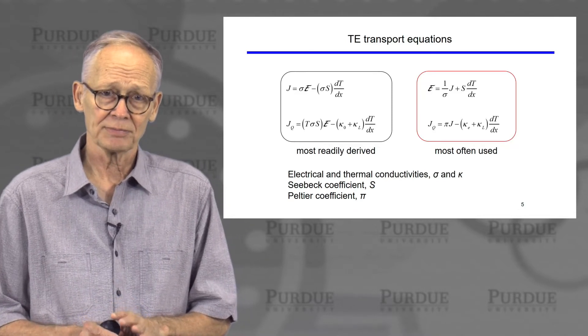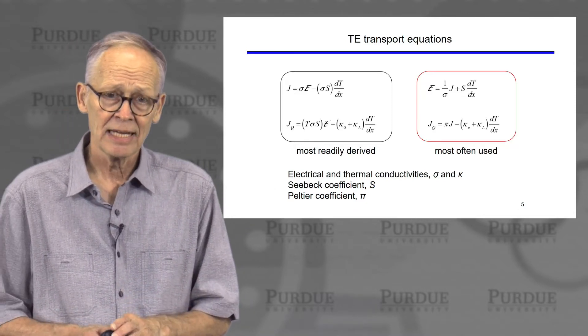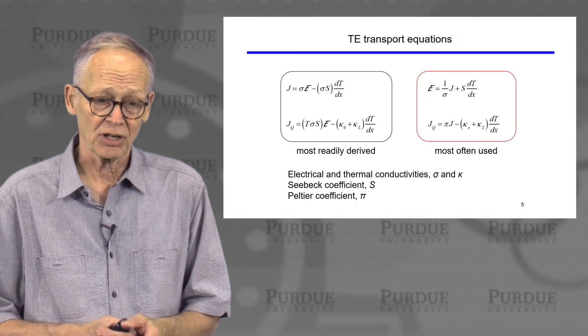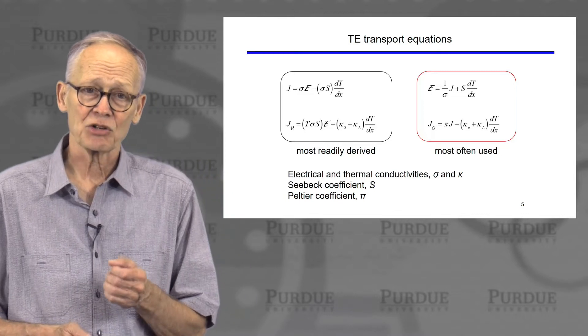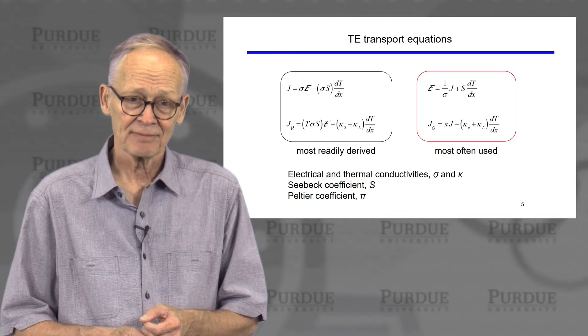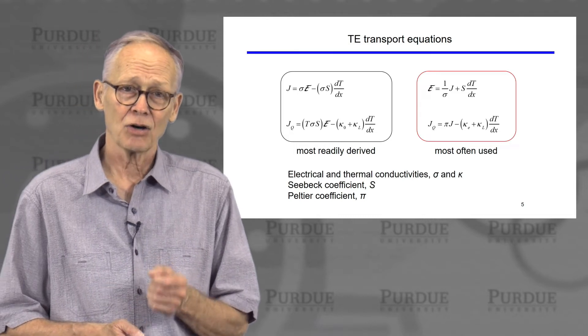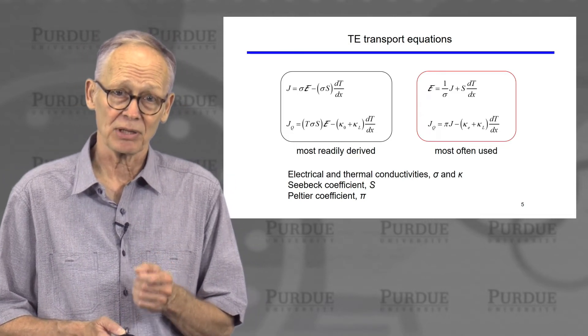There are four electrical and one having to do with the lattice. The four electrical transport coefficients are the electrical conductivity, the electronic thermal conductivity, a coefficient known as the Seebeck coefficient, and a coefficient known as the Peltier coefficient.